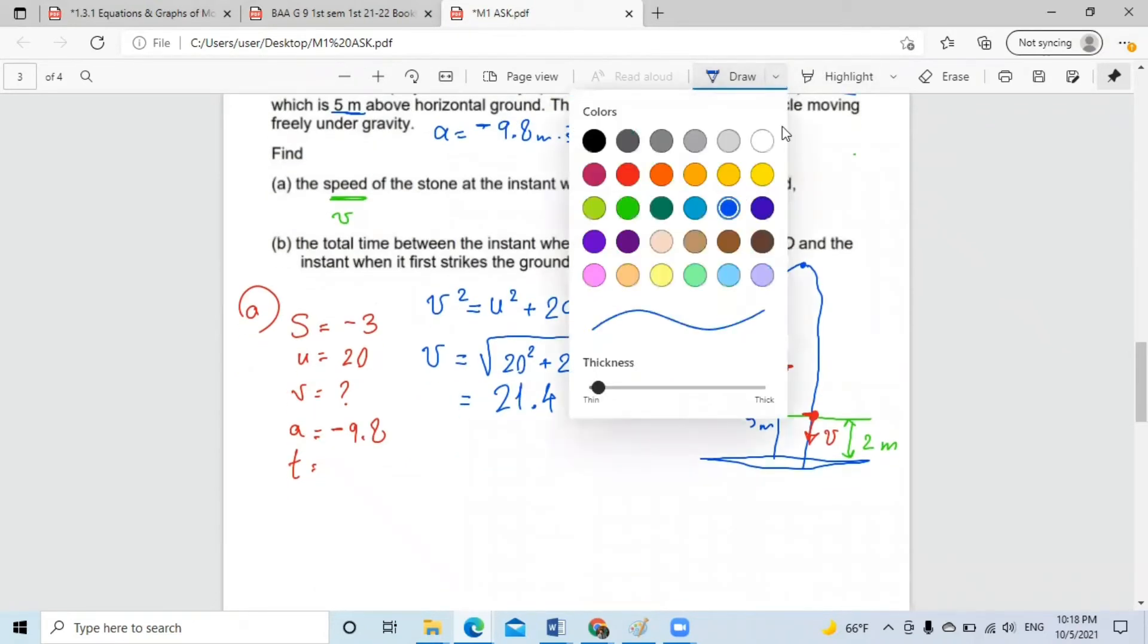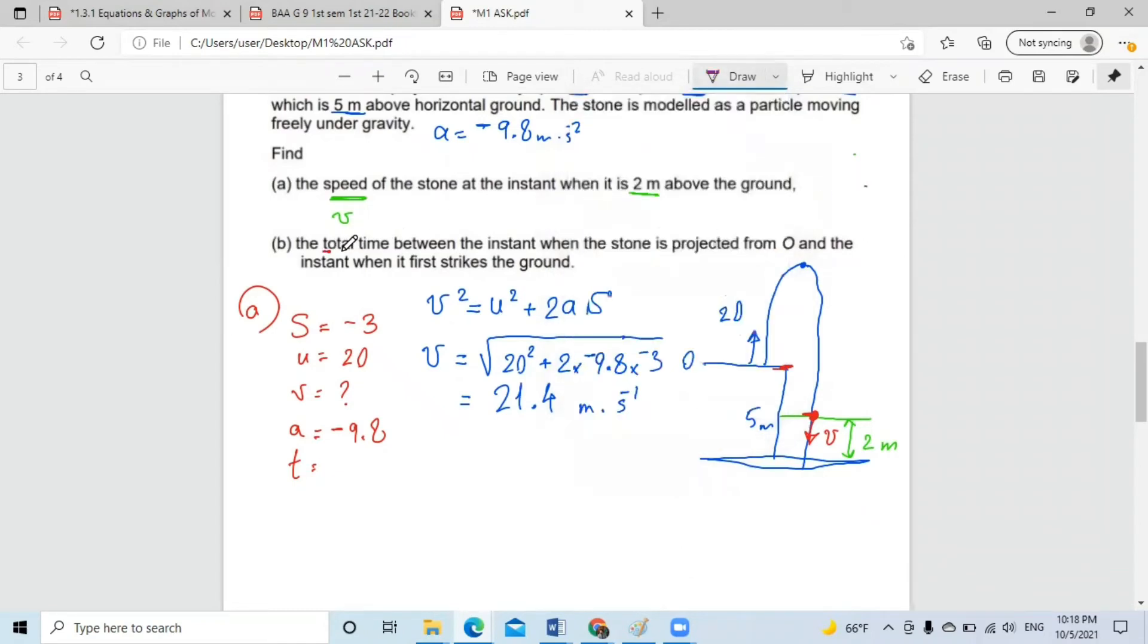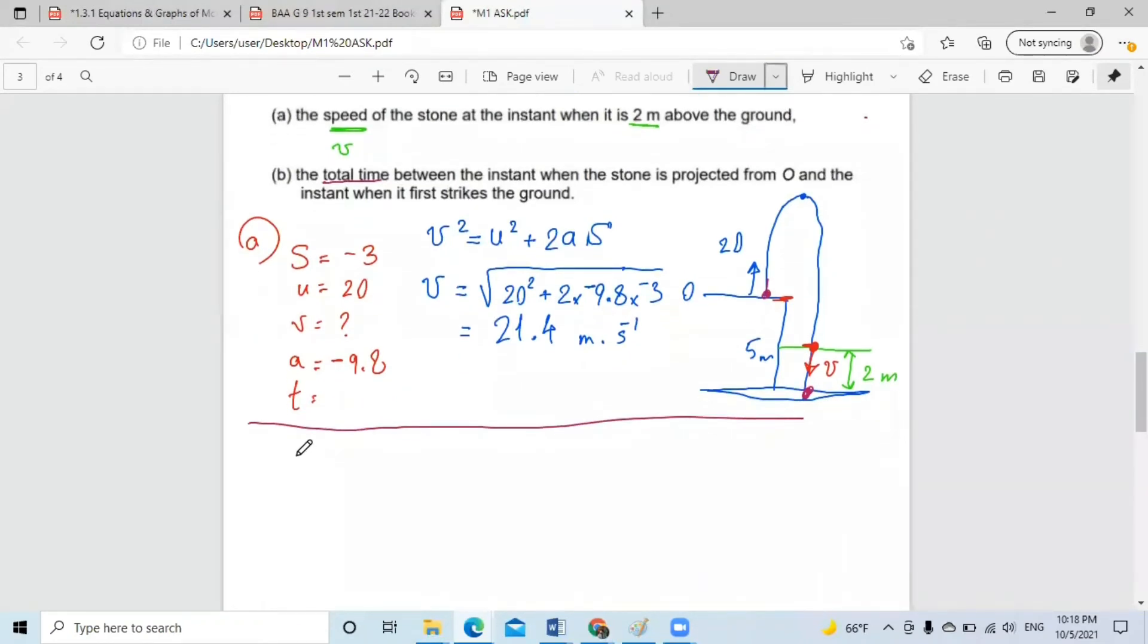Part B, what do they ask? In part B, they say that calculate the total time between the instant that it's projected from O, from here, going up, and the instant when it first strikes and hits the ground at this point. So the total displacement is going down by negative five meters. So that's part B.